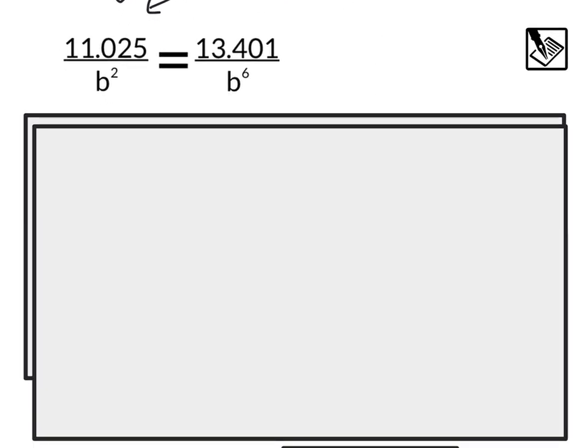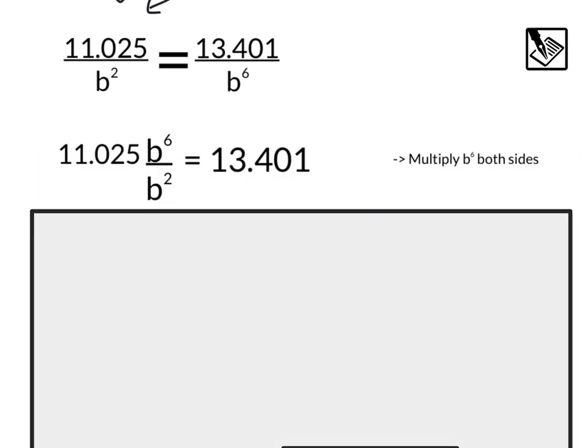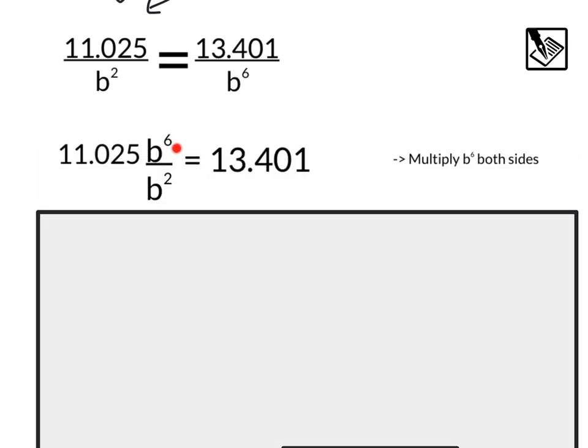So now I'm looking at this equation, and I say it looks like a proportion, so we could cross multiply to solve. We also just need to really eventually get b by itself. So I'm actually going to start by multiplying by b to the sixth, both sides to get the variable only on one side. Doing that, we are going to end up with 11.025b to the sixth, because I multiplied by that, canceled it here, it went to the left, divided by b squared equals 13.401.